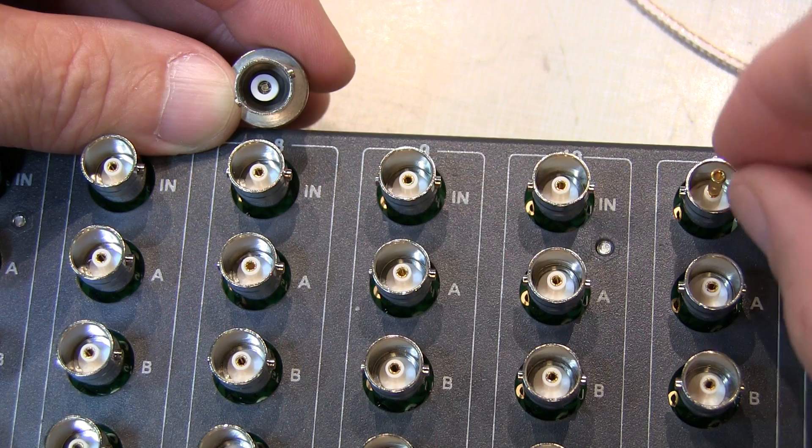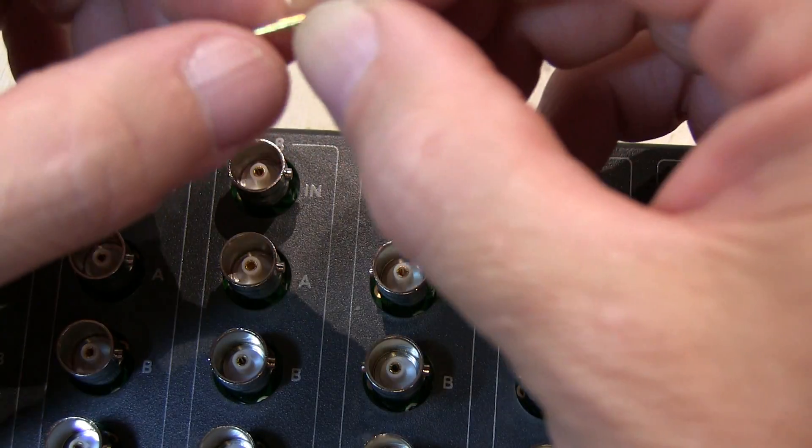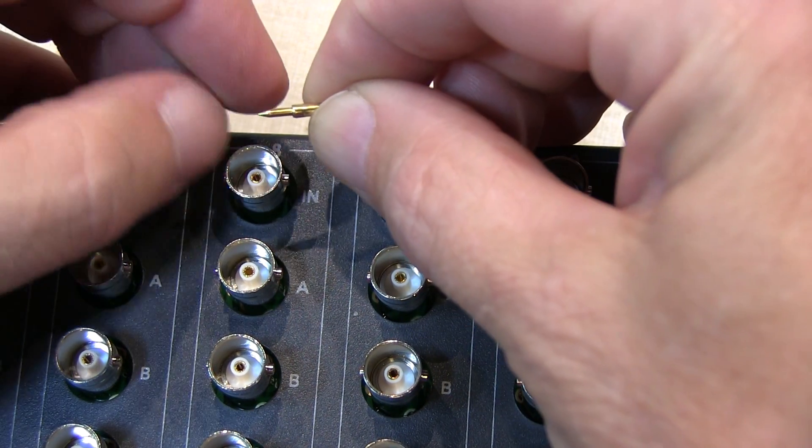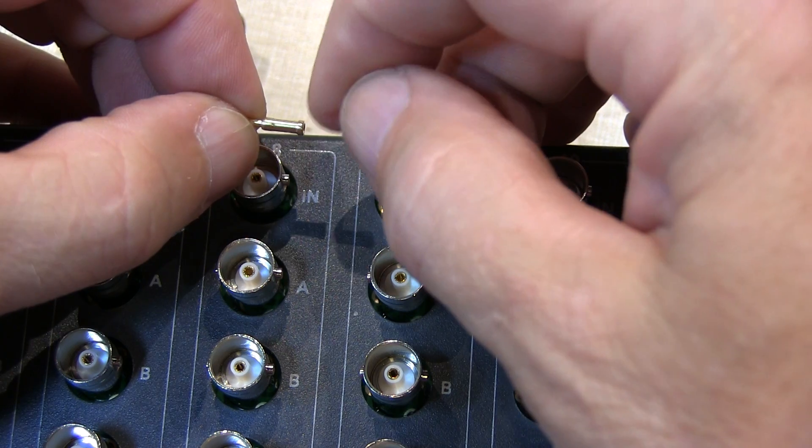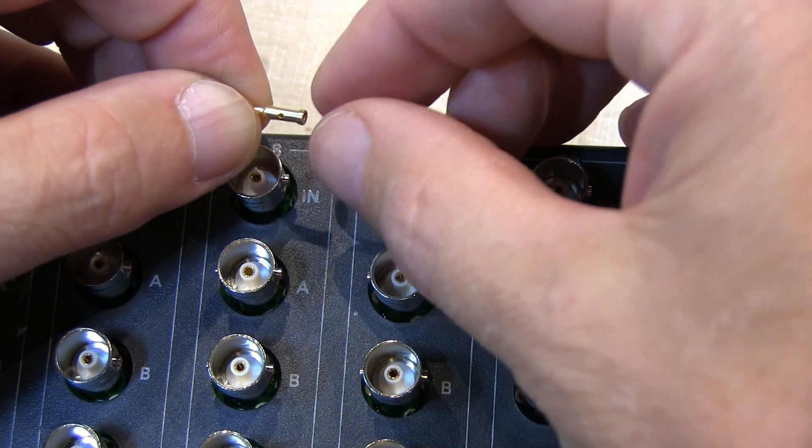And I think this stems from the fact that on the plug itself, when you're assembling them, the pin that's in there has got the same diameter on the mating surface here, but has a different diameter on the crimping or soldering surface back here, where the center pin of the coax is connected.